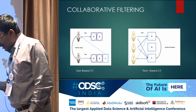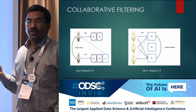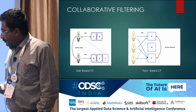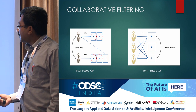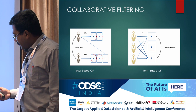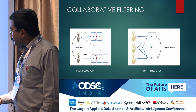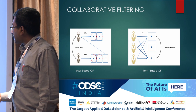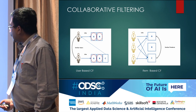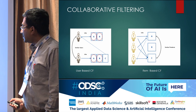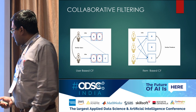Traditional recommendation systems include collaborative filtering based systems, which are still very common in production today. In user-based collaborative filtering, if there is one user and someone similar to that user, and both of them like products A and B, then this user is also likely to like product C. In item-based collaborative filtering, if two products are similar and users who like a certain set of products, then another similar product is something they are likely to like.